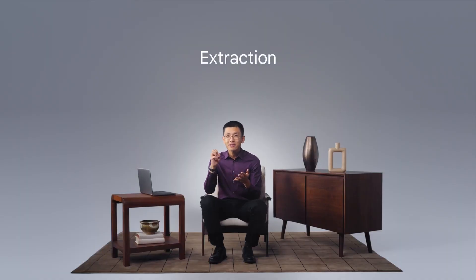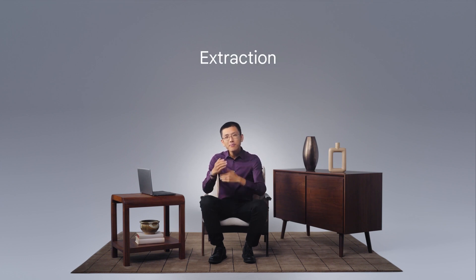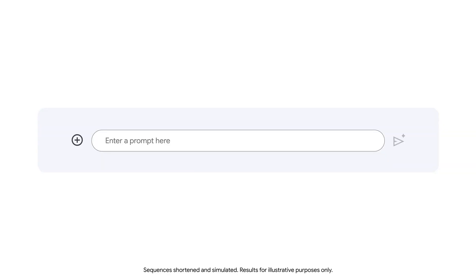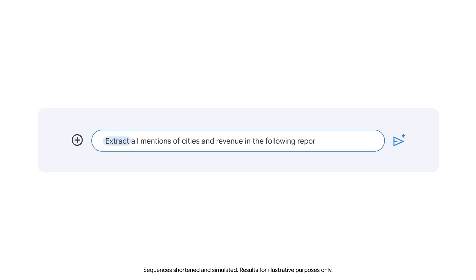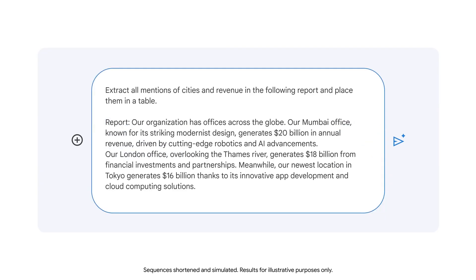Or you can use an LLM for extraction, which involves pulling data from text and transforming it into a structured format that's easier to understand. Suppose you have a report that provides information about a global organization. You can prompt Gemini to extract all mentions of cities and revenue in the report and place them in a table. Then we'll include the report in our prompt. Please be aware that you should not input confidential information into LLMs.